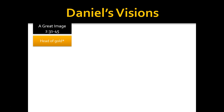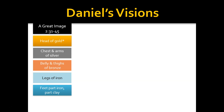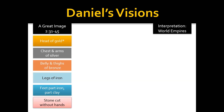Daniel was able to tell them. He said there was a great image, a great statue, with a head of gold, a chest and arms made out of silver, belly and thighs made out of bronze, legs made out of iron, and feet partly of iron and partly of clay. Then it tells us about a stone that was cut out without hands, which came and struck this great image on the feet. The whole statue came crashing down, and this stone, cut out without hands, grew to fill the entire world.